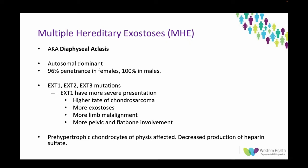MHE is autosomal dominant with 96% penetrance in females and 100% in males. It involves the tumour suppressor genes EXT1, EXT2, and EXT3. Patients with EXT1 have a more severe presentation — higher rates of chondrosarcoma, more exostoses, more limb malalignment, and more pelvic and flat bone involvement. These tumour suppressor genes are involved in the production of heparin sulfate and affect the pre-hypertrophic chondrocytes at the physis.